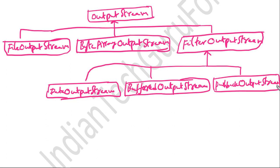So these are the various classes derived from the OutputStream: FileOutputStream, ByteArrayOutputStream, and FilterOutputStream. The subclasses of FilterOutputStream are DataOutputStream, BufferedOutputStream, and PushbackOutputStream. This is the class hierarchy for InputStream as well as OutputStream, which are referred to as byte streams. In the next video, we will see the class hierarchy for character streams.